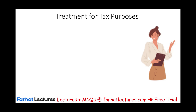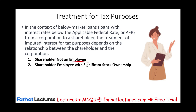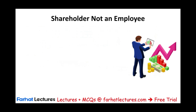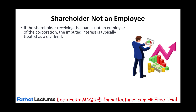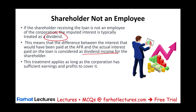The treatment of imputed interest depends on the relationship between the shareholder and the corporation. There are three situations: a shareholder who is not an employee; a shareholder-employee with significant stock ownership; and an employee-shareholder where the loan is related to services. For the first case — shareholder, not an employee — the imputed interest is typically treated as a dividend, assuming the corporation has earnings and profit. For example, if the corporation with adequate E&P lends $100,000 at 0% and the AFR is 4%, the $4,000 difference is treated as dividend income to the shareholder.